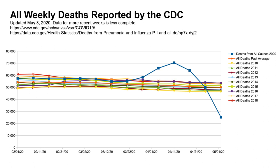This first chart shows all weekly deaths reported by the CDC. The dark blue line going above the average represents weekly deaths from all causes in 2020. You can see that we have exceeded the average significantly in the past month. Today on May 10th, the World-O-Meters website says that 80,000 people have died from COVID-19 in the US so far cumulatively. This represents about two times the average flu season.